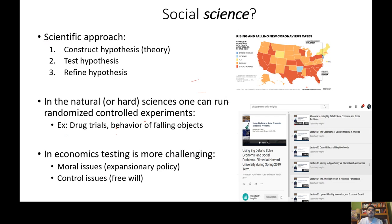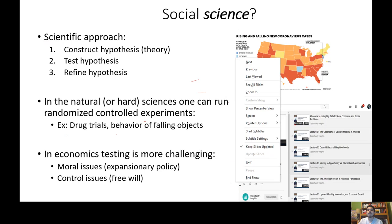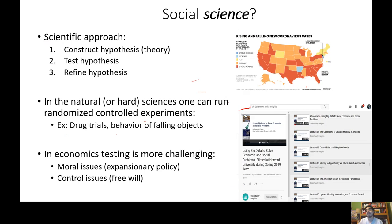Also, the rise of big data — data collected by private companies like Facebook and Google, as well as tax record and national data — has allowed economics to become even more scientific. There's a great course called 'Using Big Data to Solve Social and Economic Problems,' available on YouTube, taught by Raj Chetty, an economist at Harvard University. He goes over statistical approaches that overlap with what you're learning in AP Statistics.